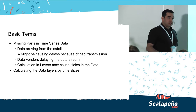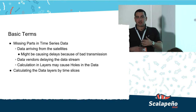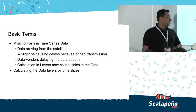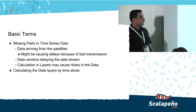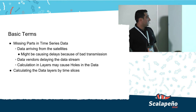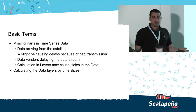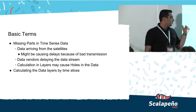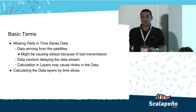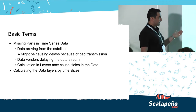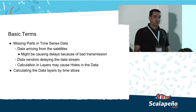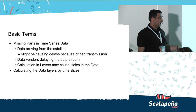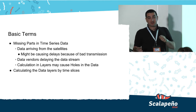Missing parts in time series data: data from satellites or data providers can be missing or arrive with a delay, due to delayed transmissions, data vendors delaying the stream because their service is down, or even bugs in our own code. If we're keeping everything idempotent, we can rerun the process on the specific time window that failed, and the data will be completed in a stateless manner. We calculate all the data layers with time slices.